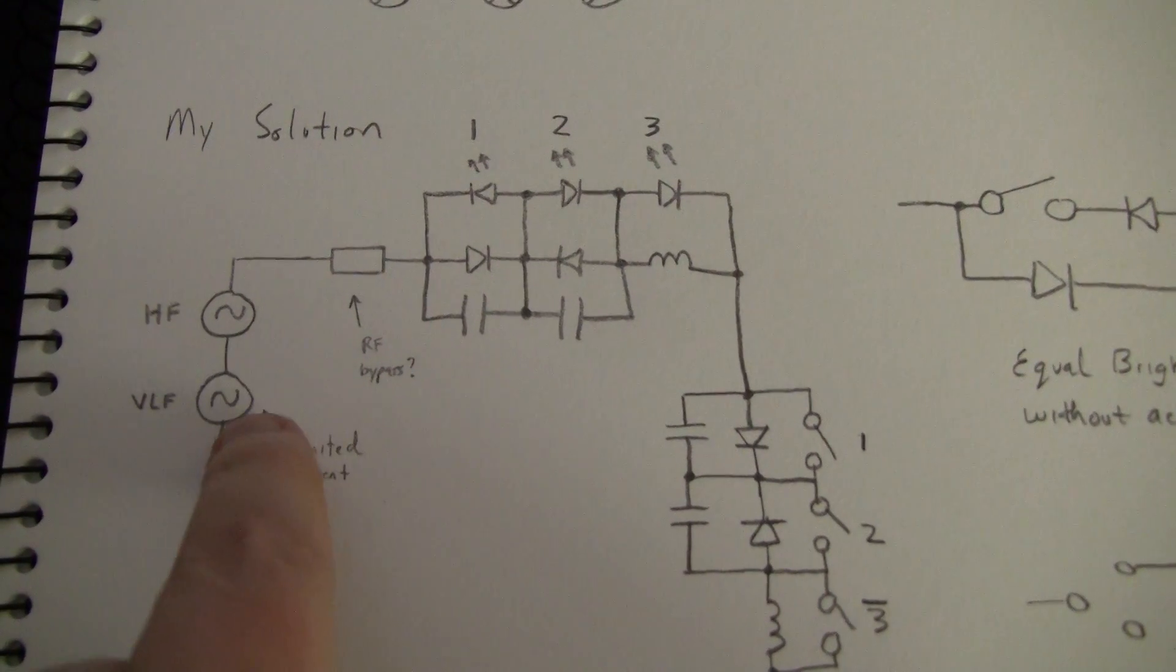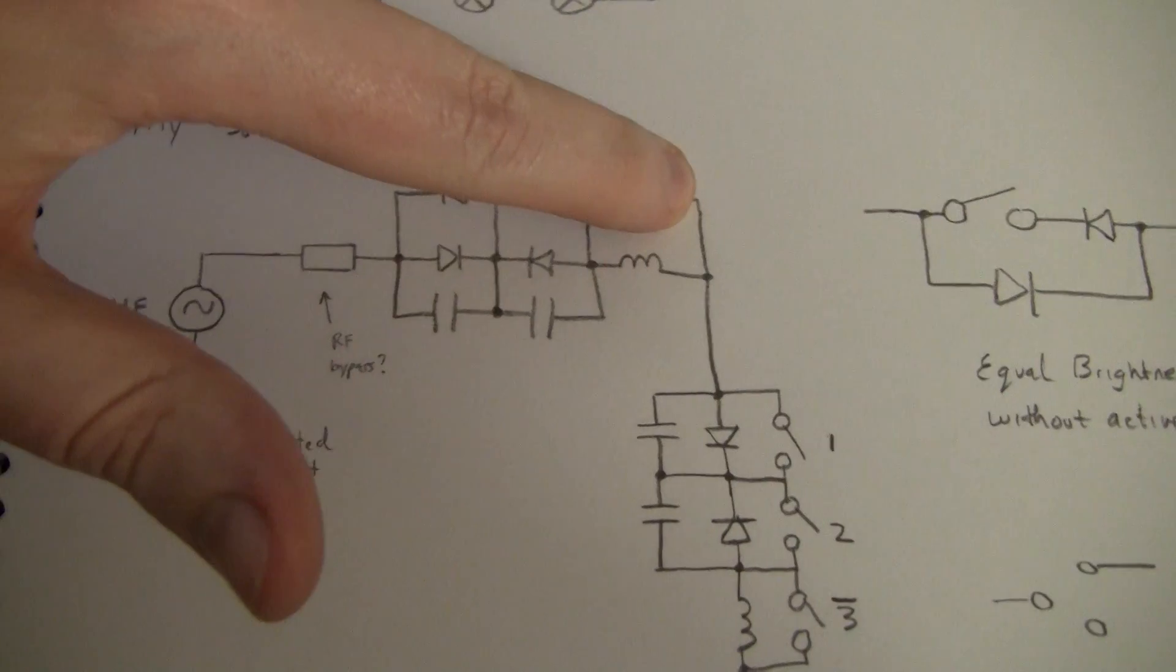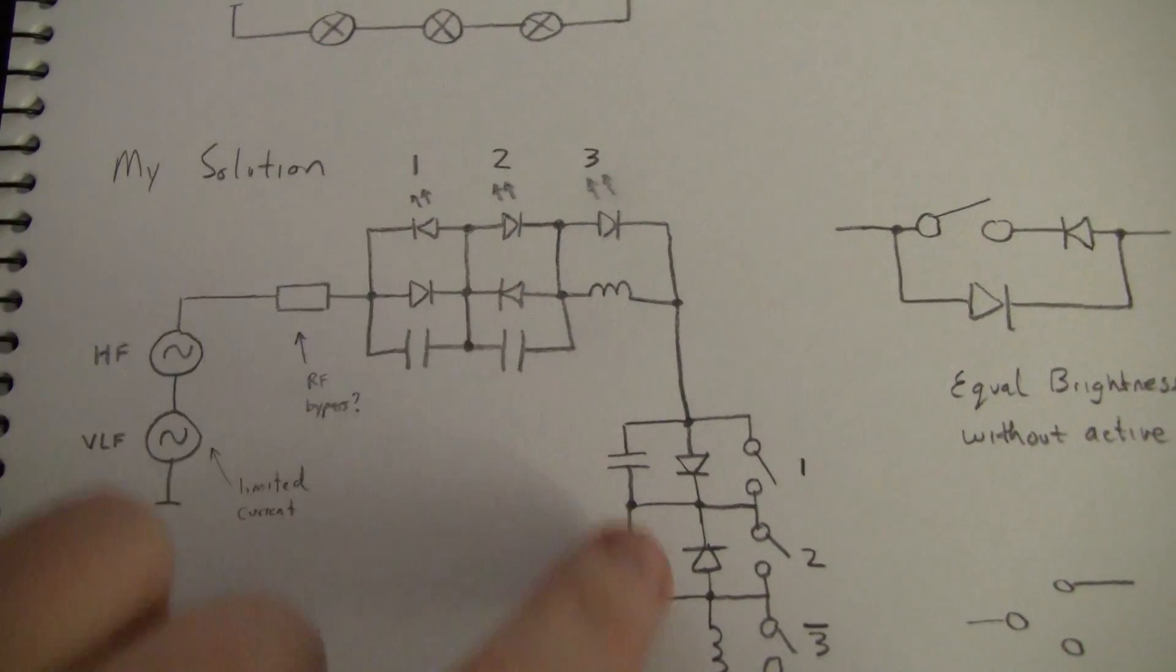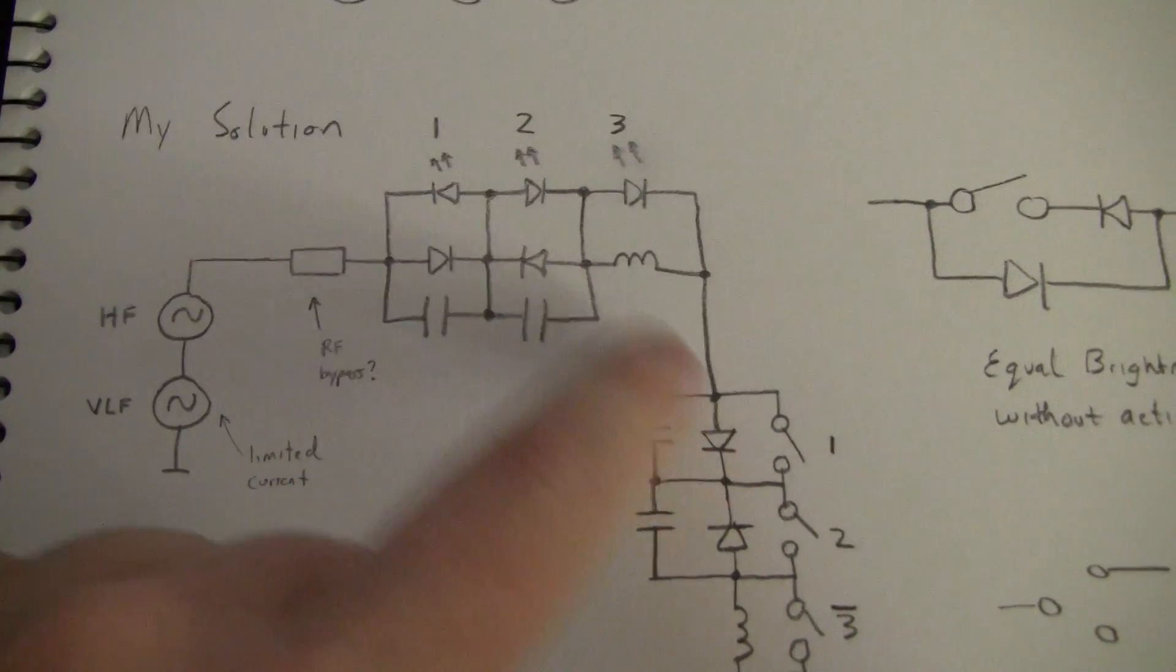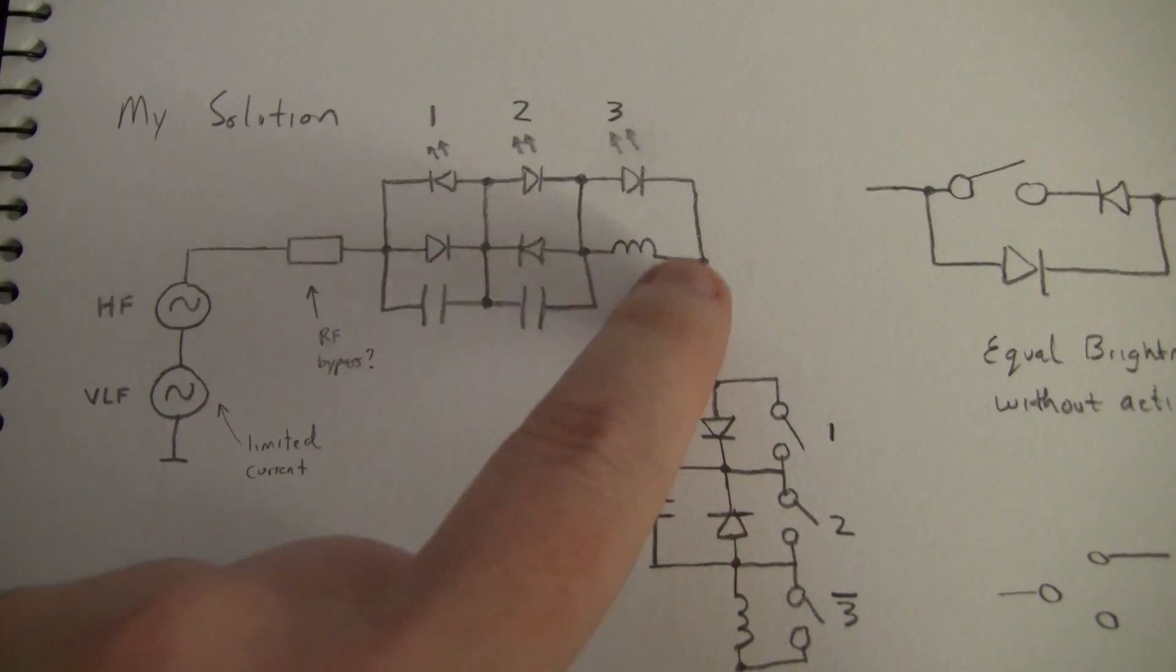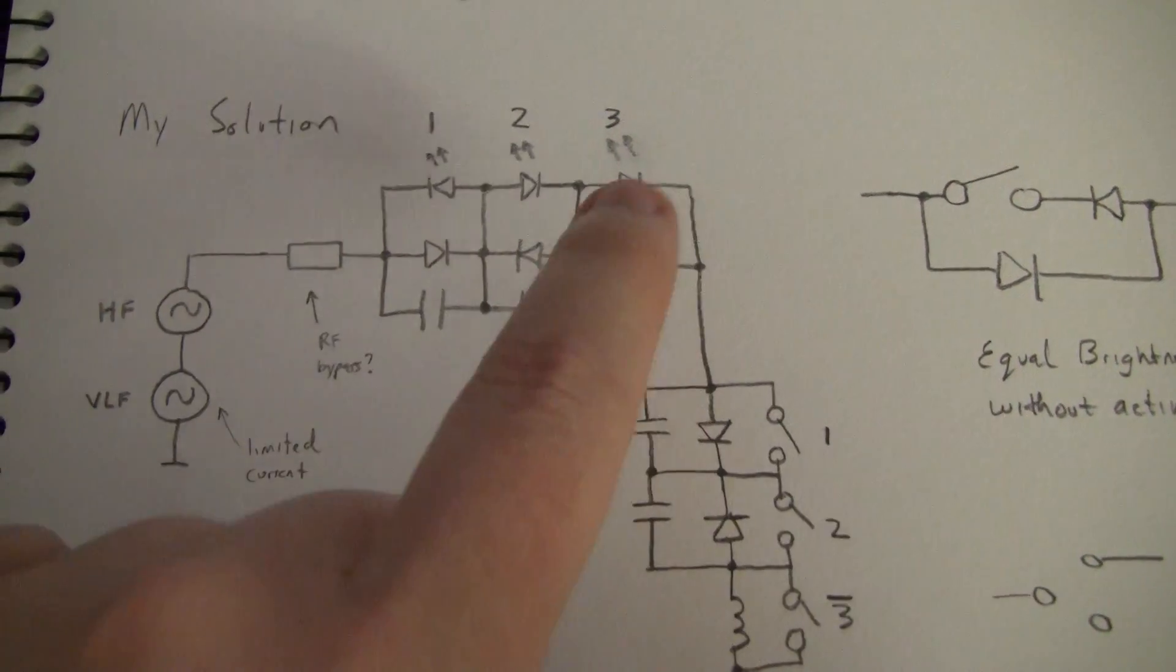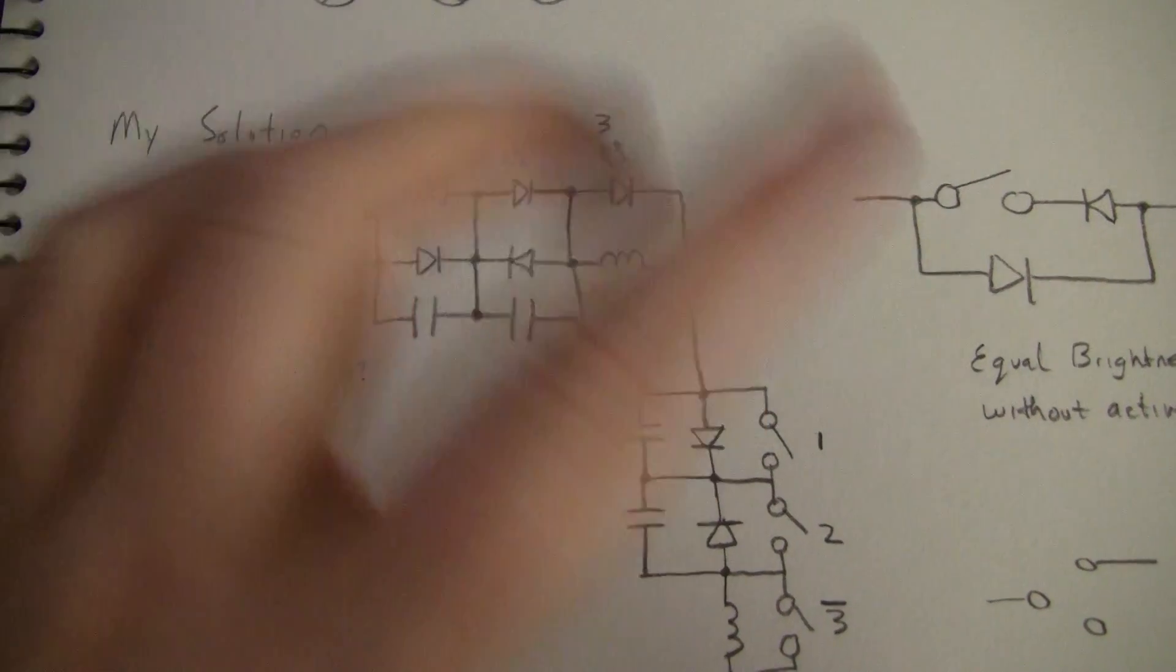Now, at the low frequencies, a couple hundred hertz, this essentially just looks shorted out, so you've got the plain old-fashioned two-circuit, two-bulb, two-switch circuit. But at higher frequencies, the RF is blocked by this inductor and has to pass through the LED. The LED will rectify it and glow.